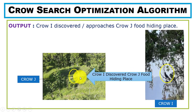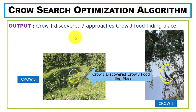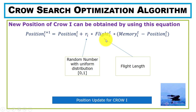Since crow i has discovered the hiding place, we update its position using a mathematical equation. In real life crows fly and change position, but here we use a mathematical model. Using this equation we update crow i's position: to the initial position we add a random value multiplied by the flight length, the crow's memory, and its current position. This equation updates the position for crow i.